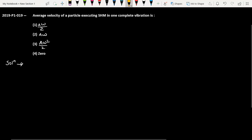First of all, we have to understand what is the displacement of a particle performing simple harmonic motion in one complete vibration. Let me explain it with the help of a diagram. Let's say this is the spring-block system which performs simple harmonic motion. Spring constant is K.